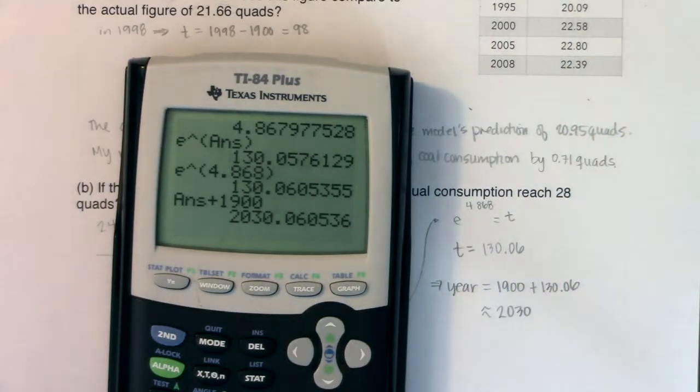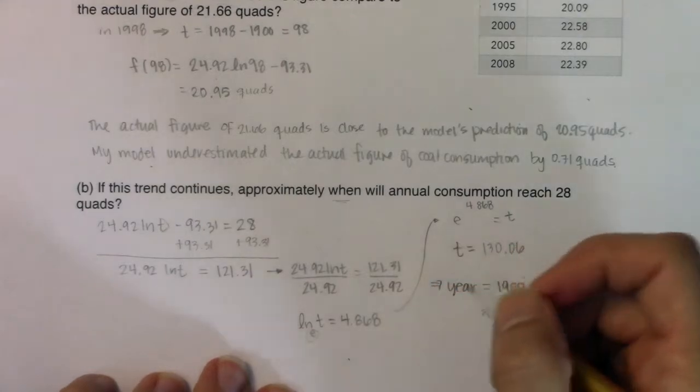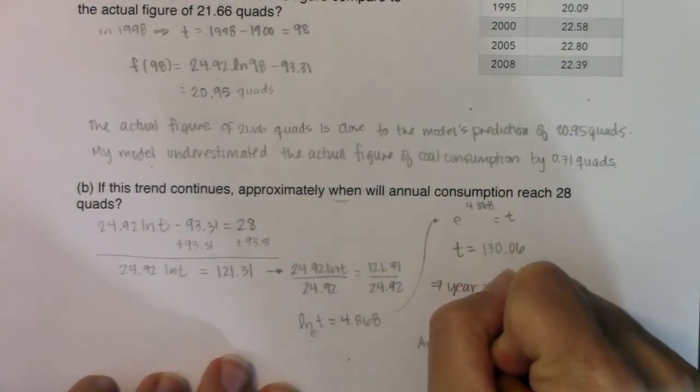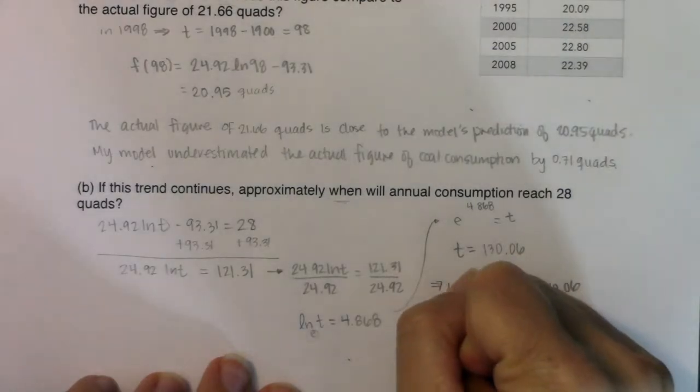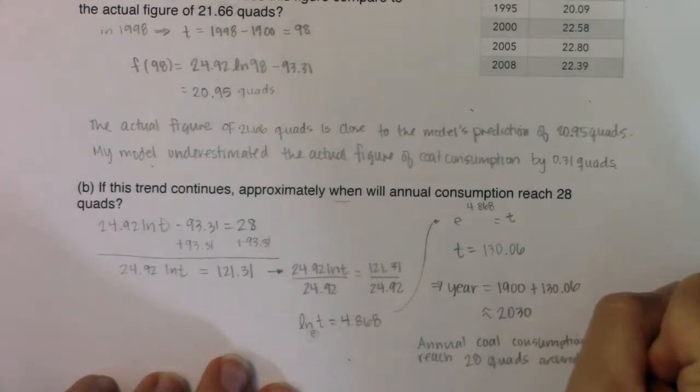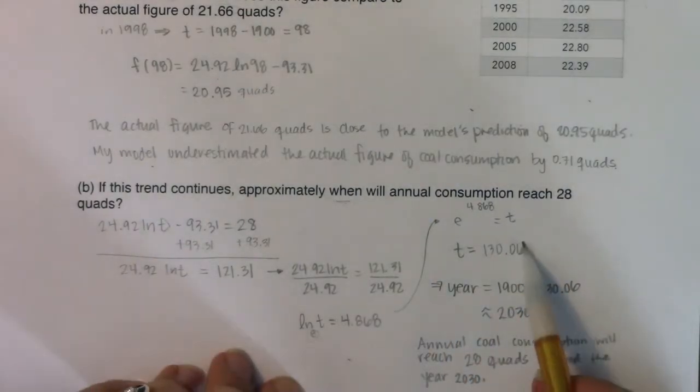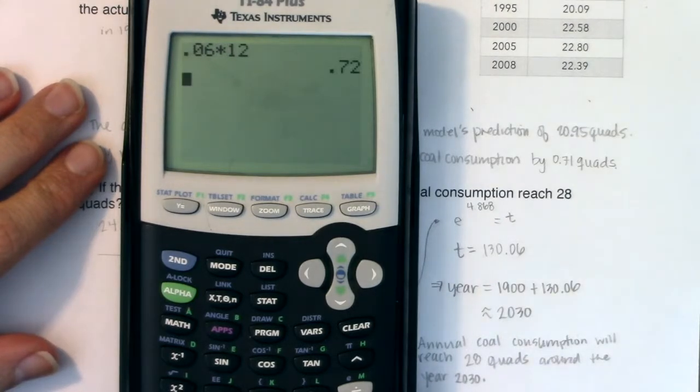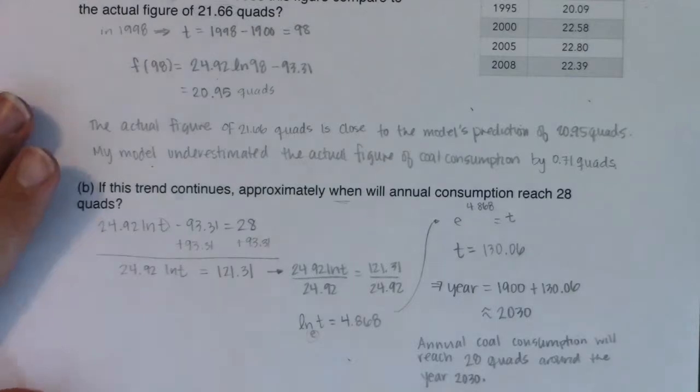So annual coal consumption, or yeah, annual coal consumption will reach 28 quads around the year 2030. It will technically hit it pretty close to January because you've got 0.06 years here, and if I converted that to months, 0.06 years times 12 months in a year, I'm still within the first month. So somewhere around January of 2030 is when my annual coal consumption will hit that level of 28 quads.